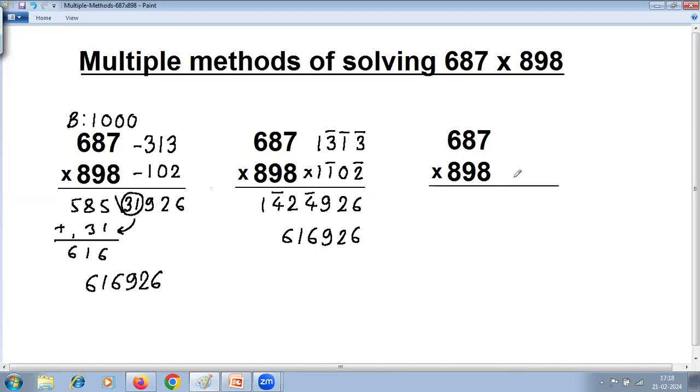Next, we'll try to make use of series of 1. To make use of series of 1, we can convert 898 as 888 plus 10. First problem is 687 multiplied by 888. When you have got all digits same, you should always try and make use of series of 1. 888 can be written as 111 into 8. So first multiply by 111, that is series of 1.